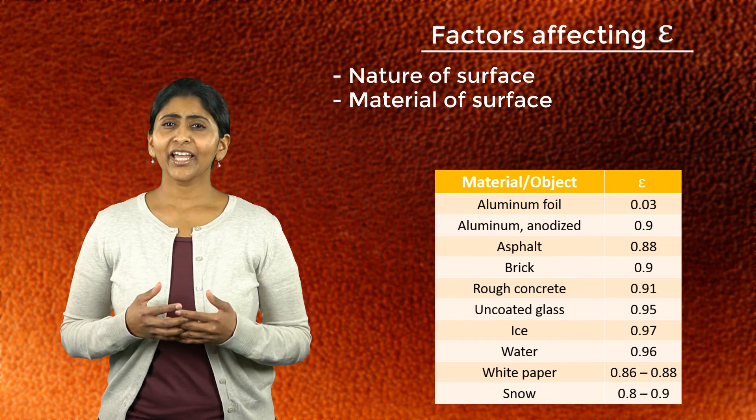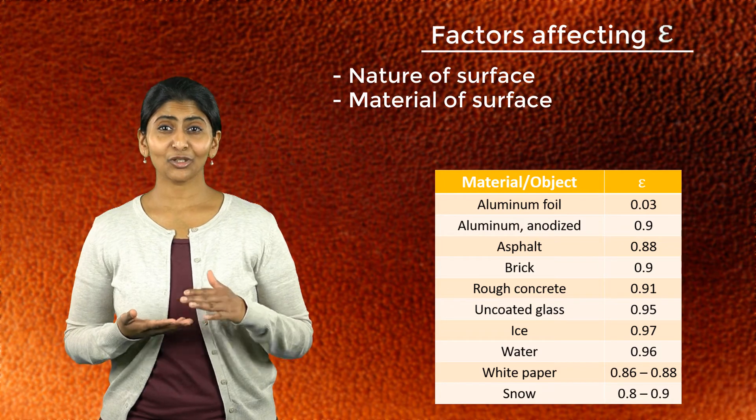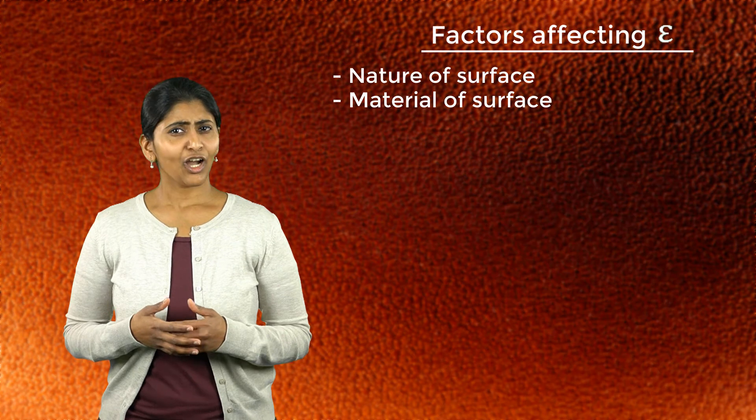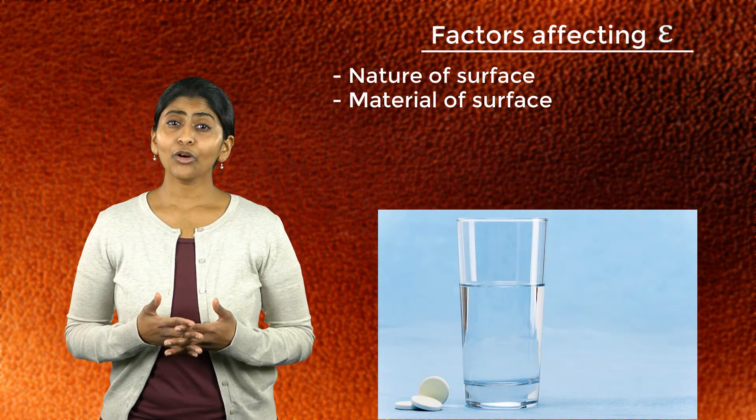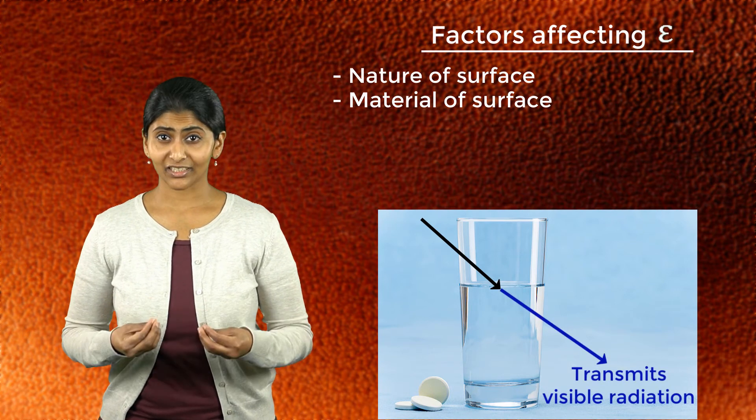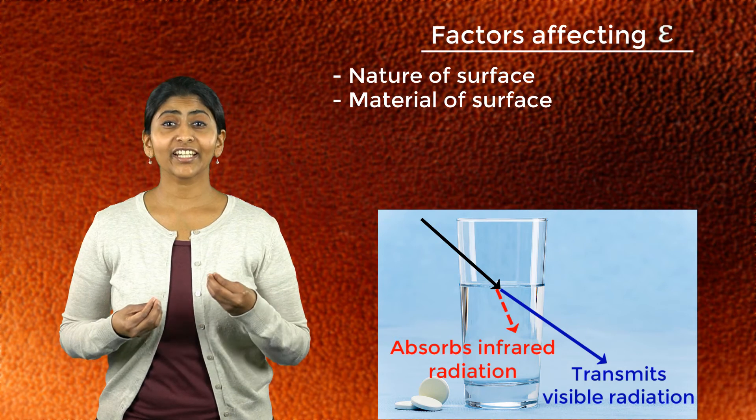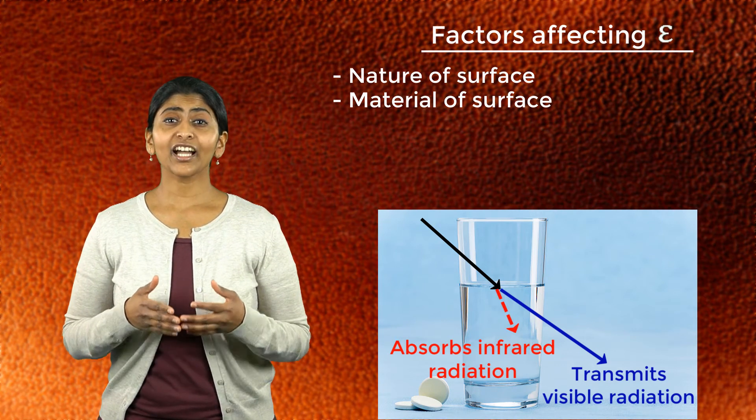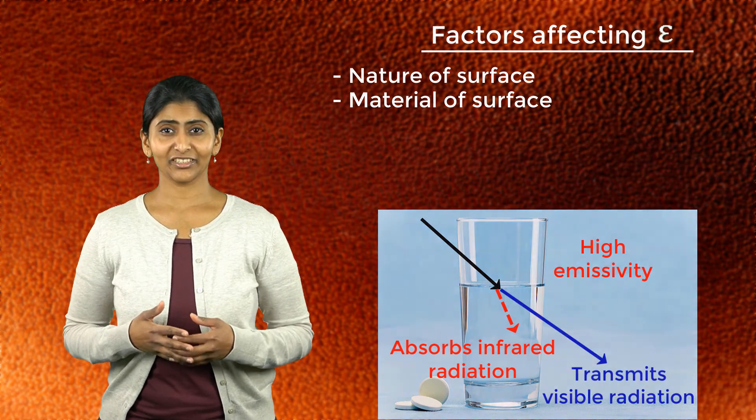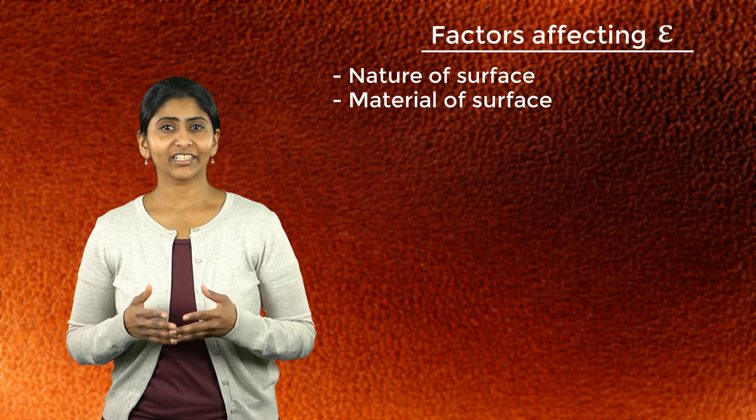But apart from bare polished metals, the general color or appearance of a surface is not a good way to estimate its emissivity. For example, pure water absorbs very little visible light and hence may appear transparent, but it is a very good absorber of infrared radiation. Hence, water has a high emissivity despite its transparent appearance.